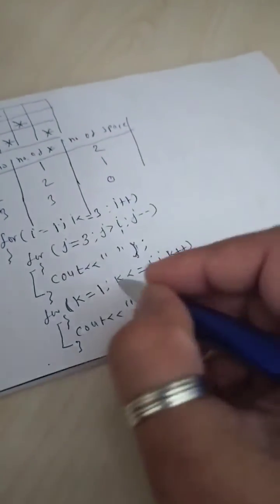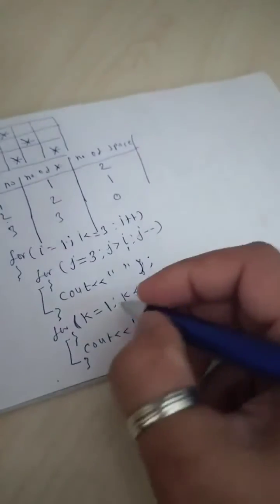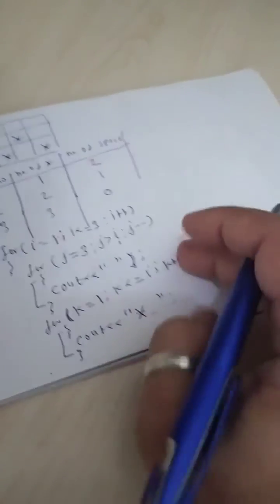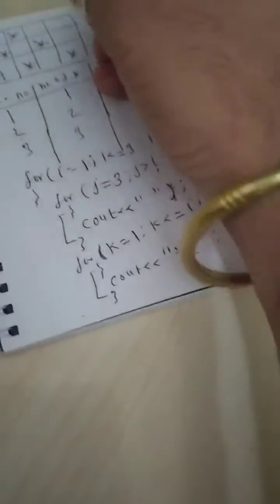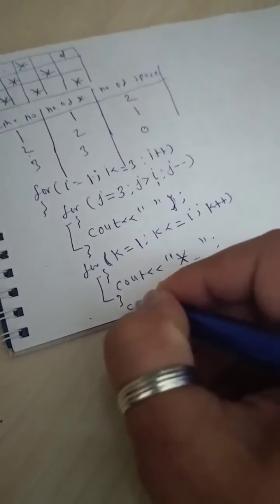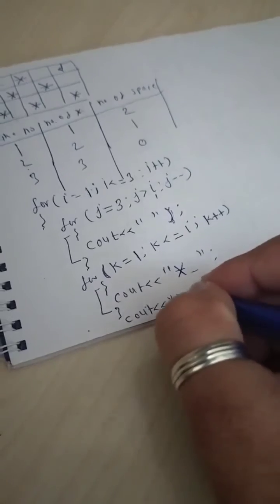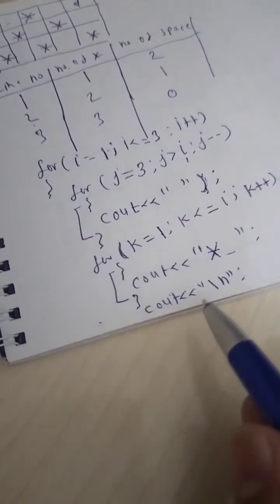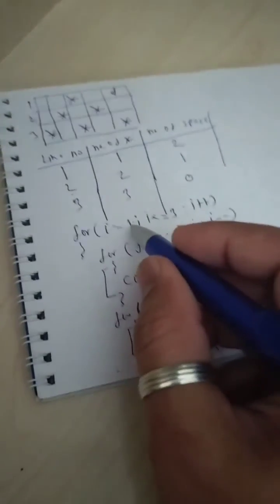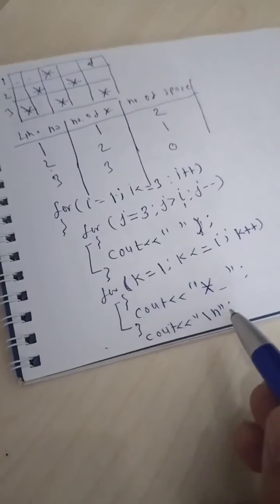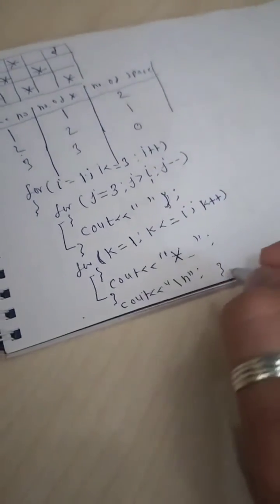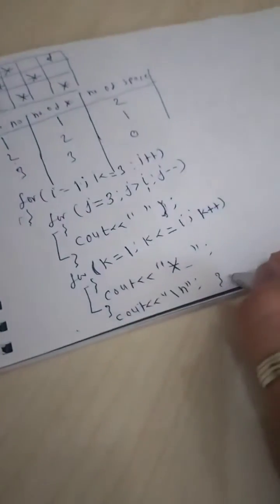When i equals one, the K loop executes once; when i equals two, it executes twice, printing two stars. Once the spaces and stars are printed, at the end I need to add a newline operator. So I will add a cout with slash n, or endl — either one — and this cout is not inside any inner loop but inside the outer i loop. This is how the i loop is closed.